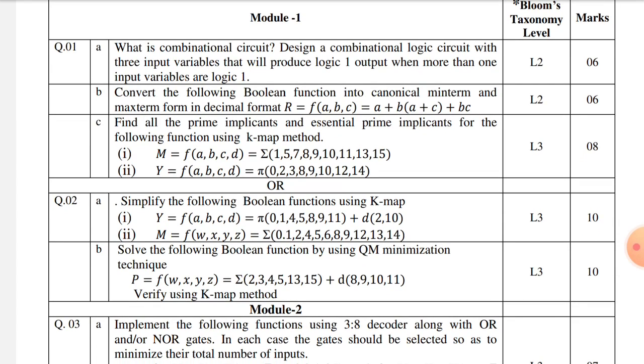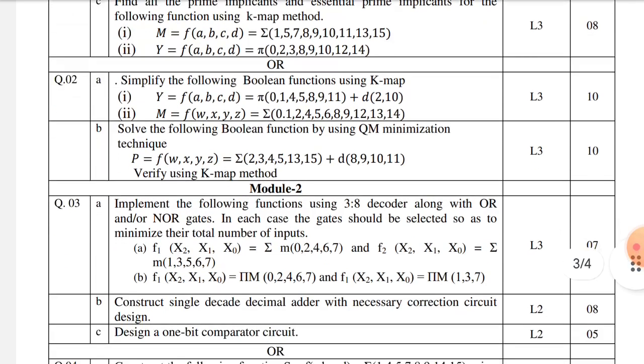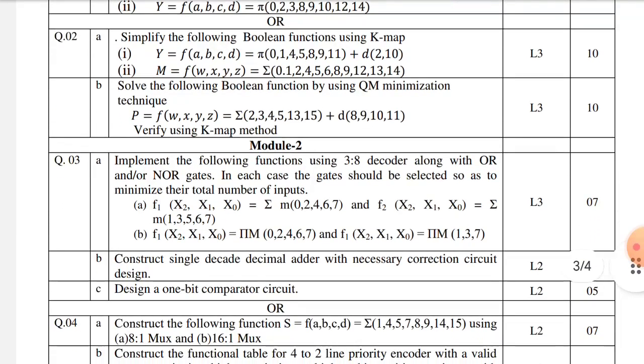Also, they have given the essential prime implicants and prime implicants you need to find out using K-map. In the OR question, they have given the K-map simplification and also QM minimization, that is Quinn-McCluskey.